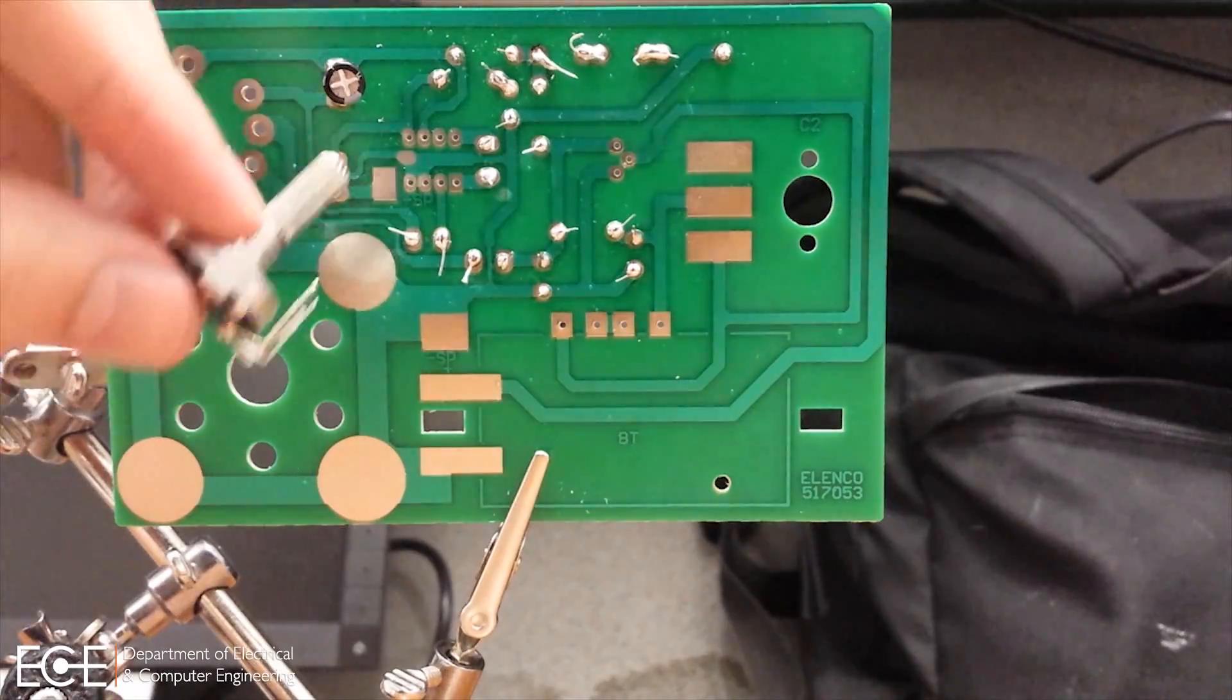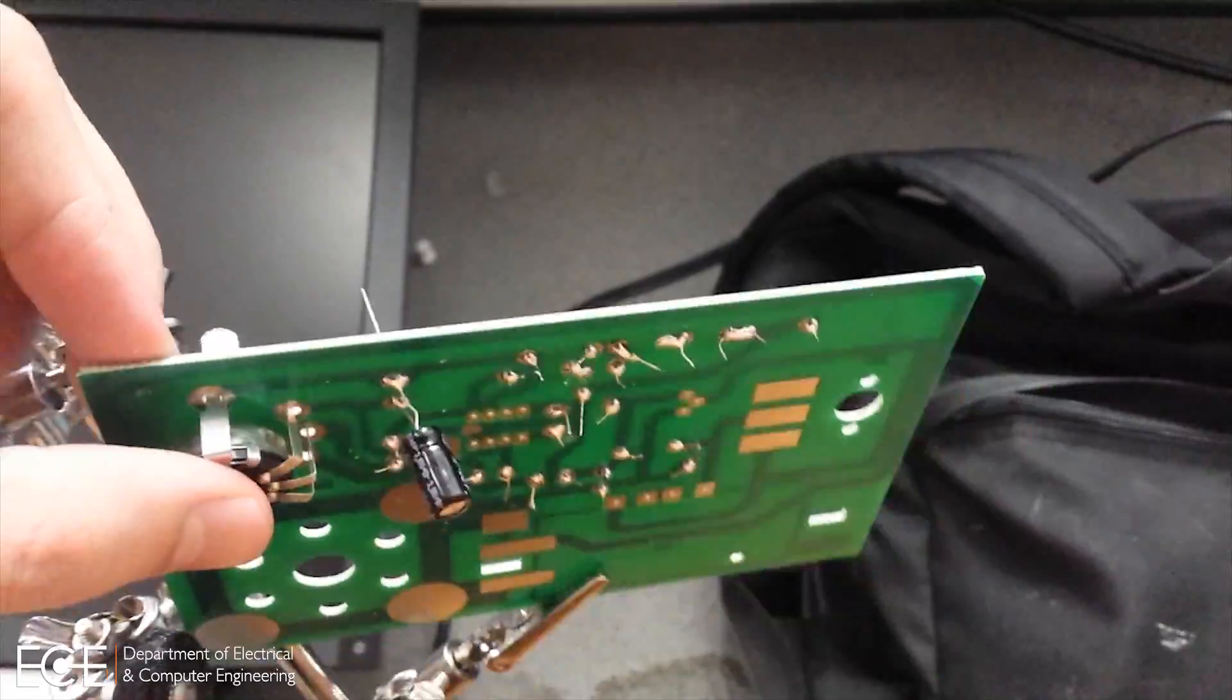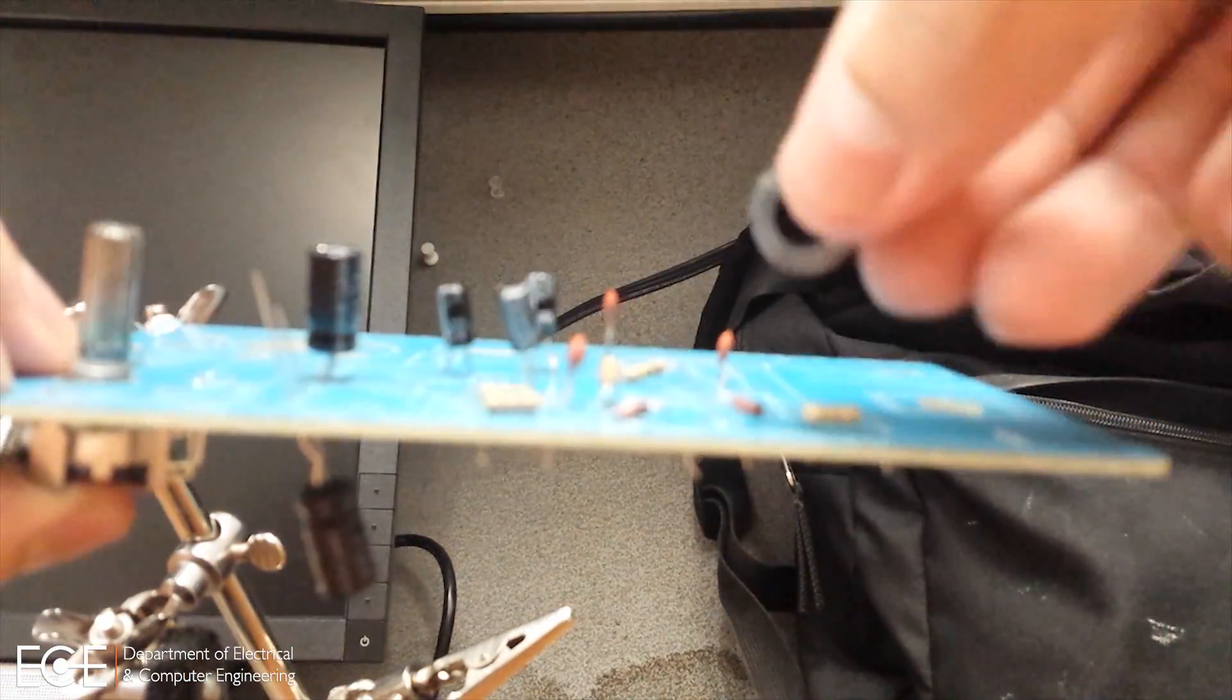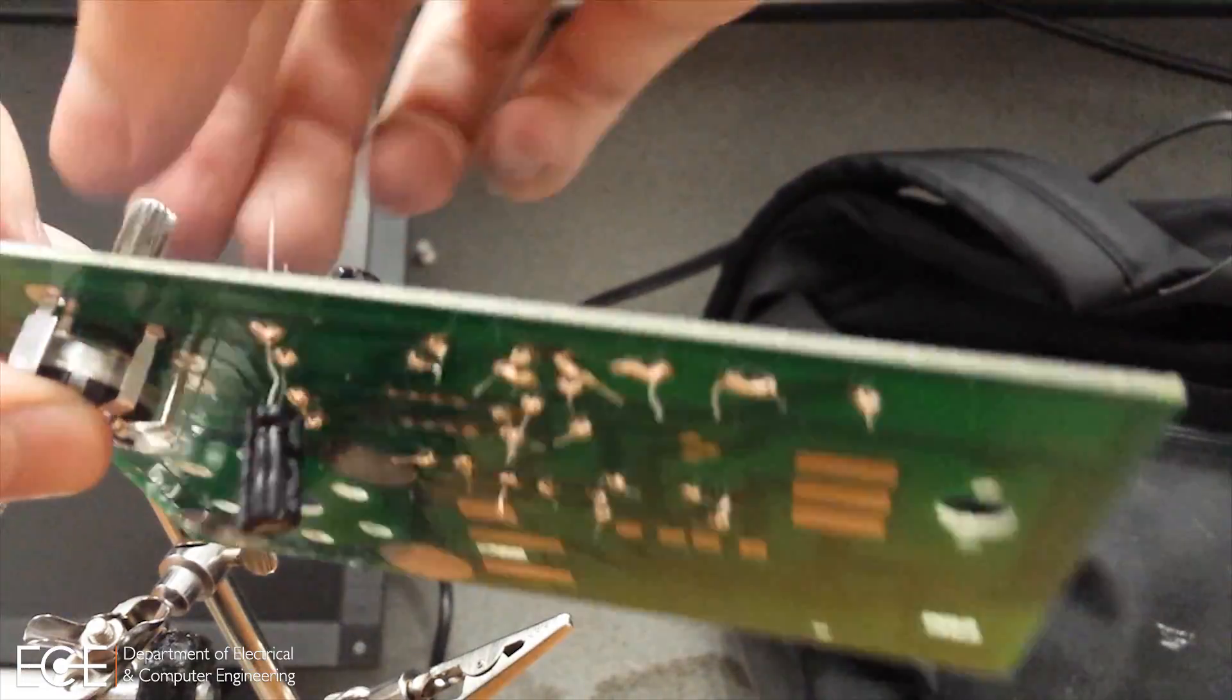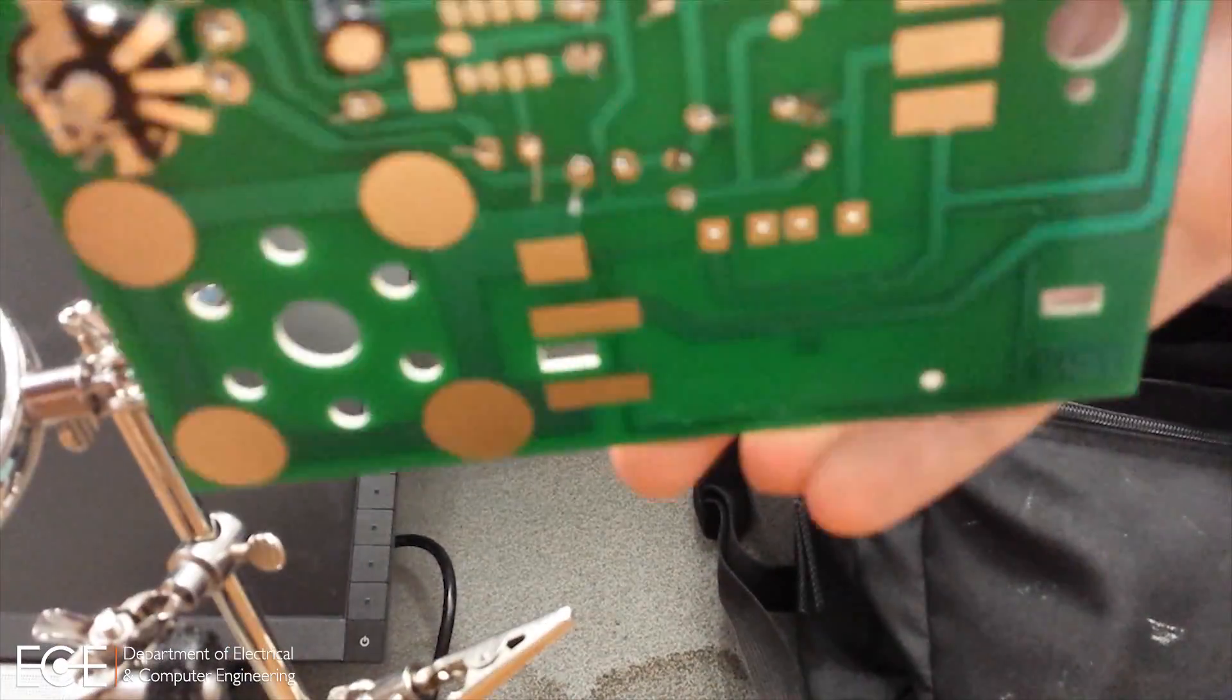After you've soldered those components, you're going to put in the potentiometer. The potentiometer comes with a washer and a nut. You're going to put the washer on first, then the nut, screw it in, and then you will solder all five legs of the potentiometer.